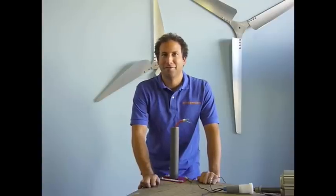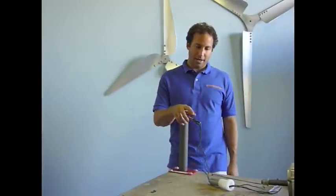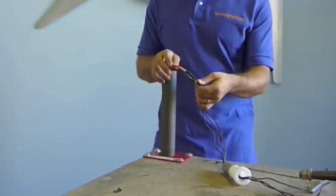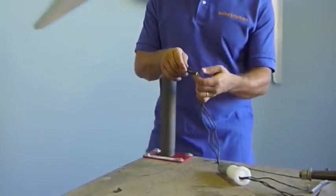Hi everybody, Josh here again from Windy Nation. Alright, so we went ahead and finished the three connections from the slip ring to the tower pipe and we put shrink tubing over them.